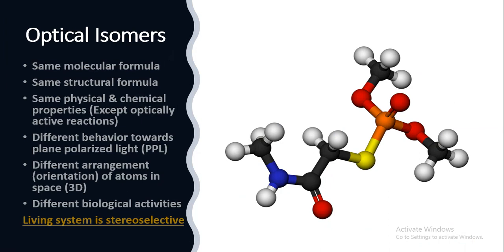Optical isomers have the same molecular formula and same structural formula. They have the same physical and chemical properties except in optically active reactions. They have different behavior towards plane polarized light, different arrangement of atoms in three-dimensional space — which is what makes them optically active — and different biological activities because our living system is stereo selective.